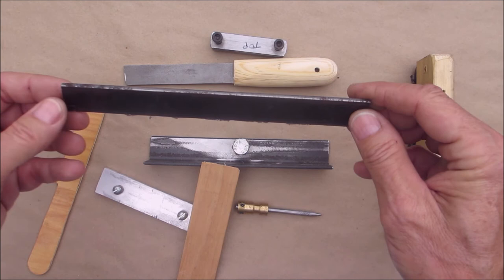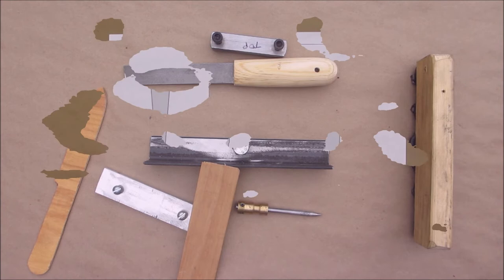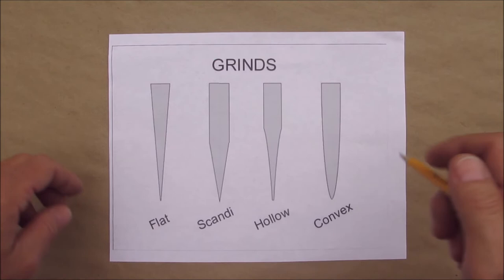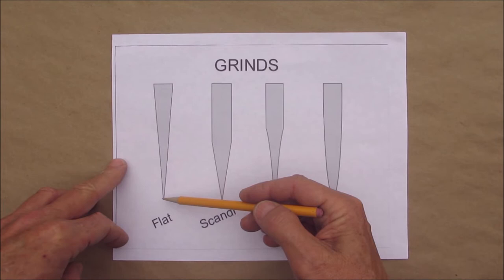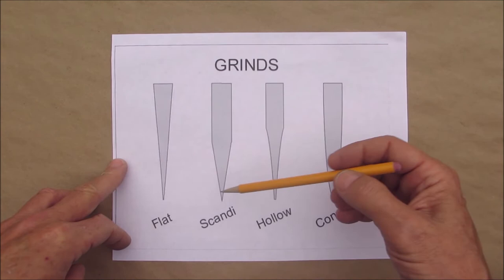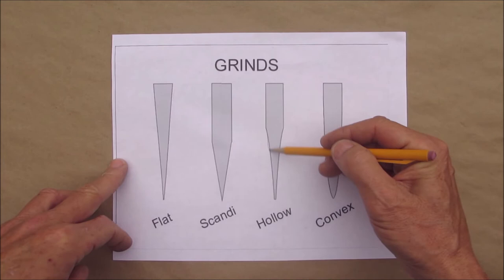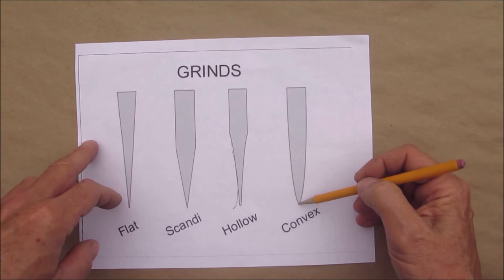One other thing I wanted to show you is the grinds. Let me grab that and bring that. This is the last thing we talk about before we actually get into making it. So these are the different types of grinds. Most of the knives that I saw today, the reproductions, they're using a flat grind. The other types of grinds, basic ones, are the scandi grind, the hollow grind, and then the convex.